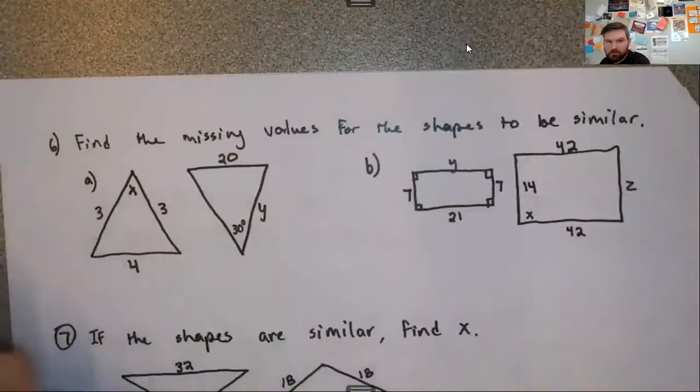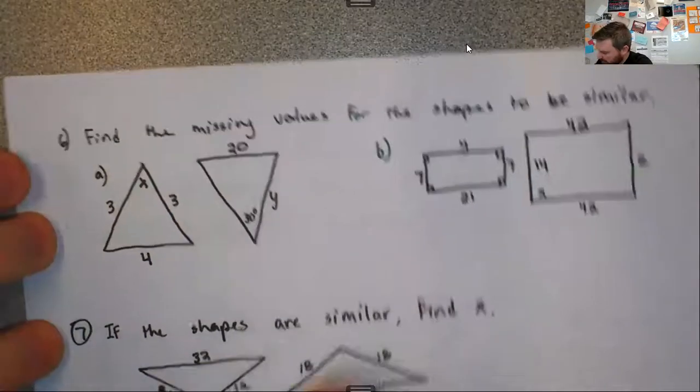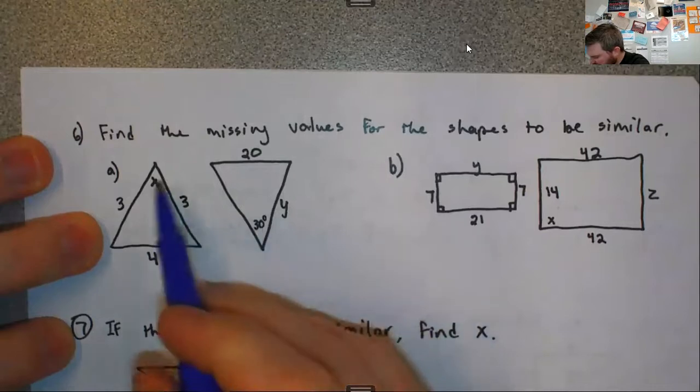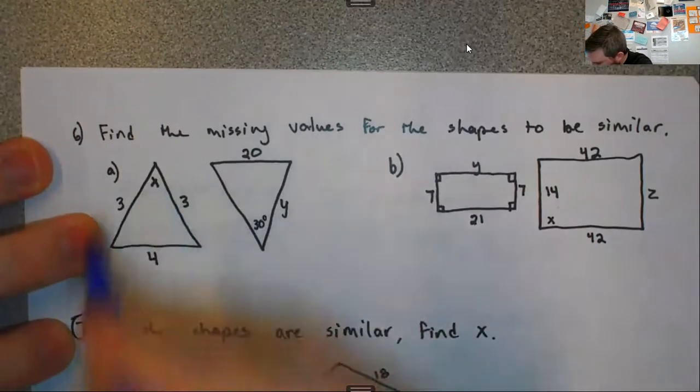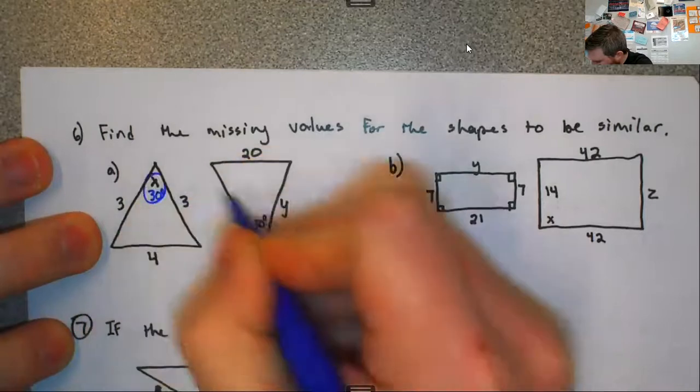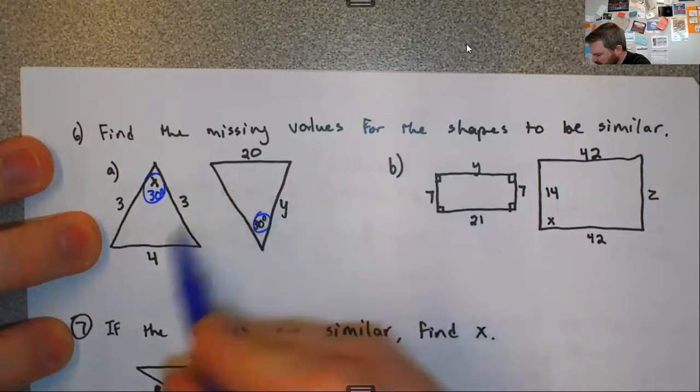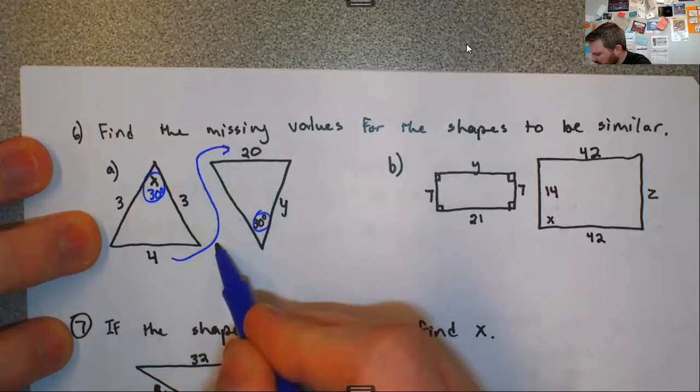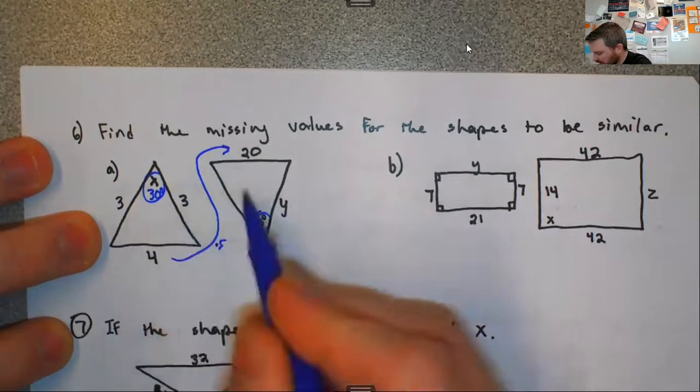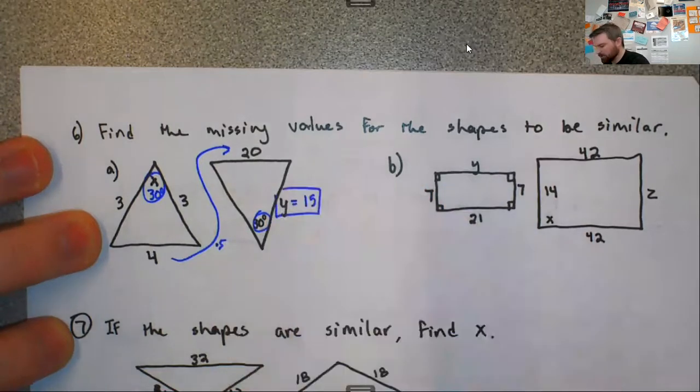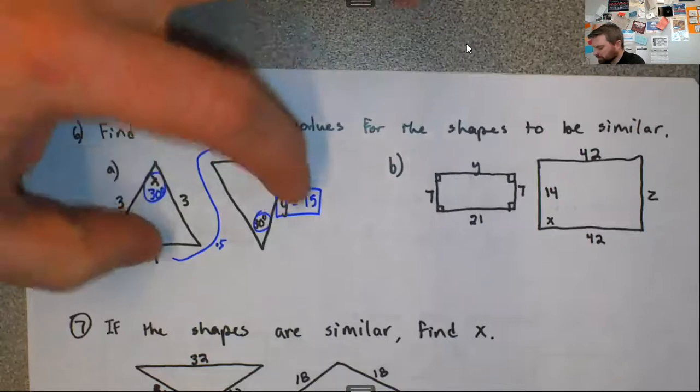Flipping over to the back here. Find the missing values for the shape to be similar. We have a triangle here. Remember that the angles must be the same. So this x must be 30 degrees as well. And your sides must be proportional. So going from 4 to 20, that's times 5. So everything else must be times 5. So 3 times 5 is 15. Your angles are the same. Your sides are proportional.